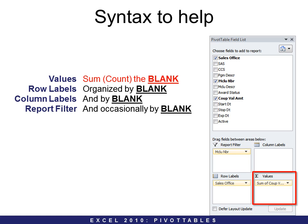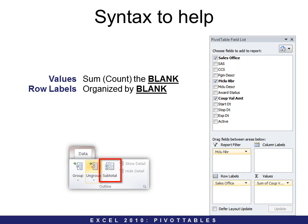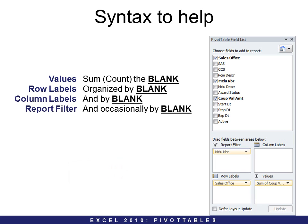SUM the blank is going to be a value — that's in the bottom right values area. Organize by blank becomes a row label. And by blank becomes a column label. Occasionally by blank is a report filter. If you find you only need SUM the blank organized by blank, then you probably don't need a Pivot Table — you could do that with a Subtotal, found under Data > Subtotal. But if you have three or more of these, then you definitely want a Pivot Table.